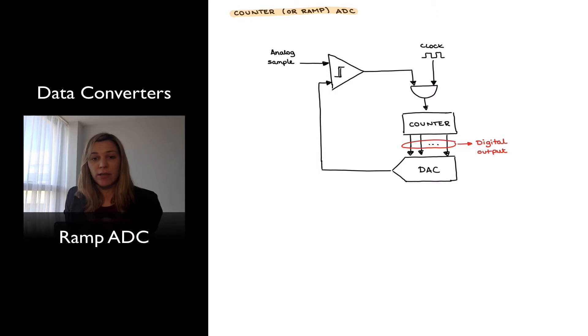Here is a block diagram of a ramp ADC. Notice that it uses a comparator, and then it has a counter and it has a DAC. The idea is that there is an analog sample provided to the input of the comparator, then that's fed through some logic to the counter. The counter outputs the digital output, which is fed into the DAC and fed back to the comparator.